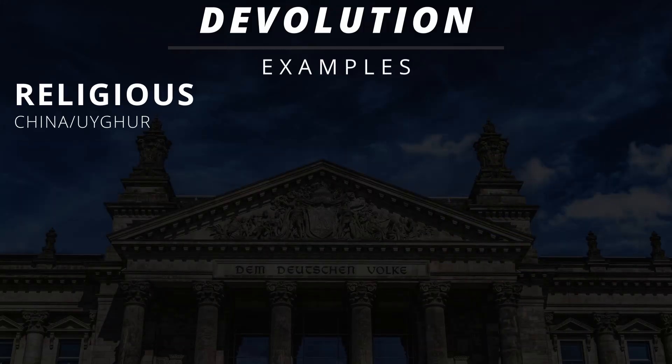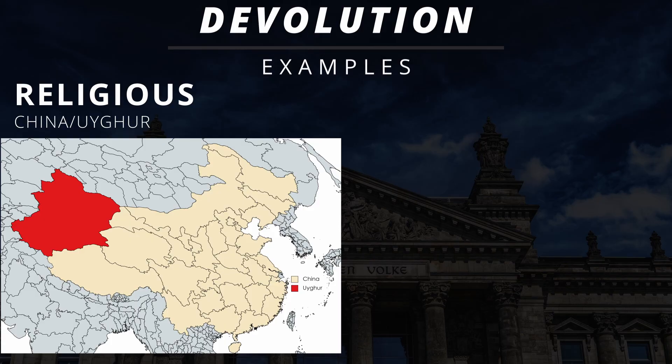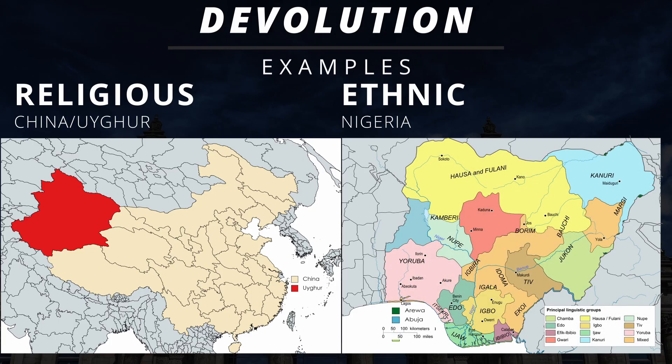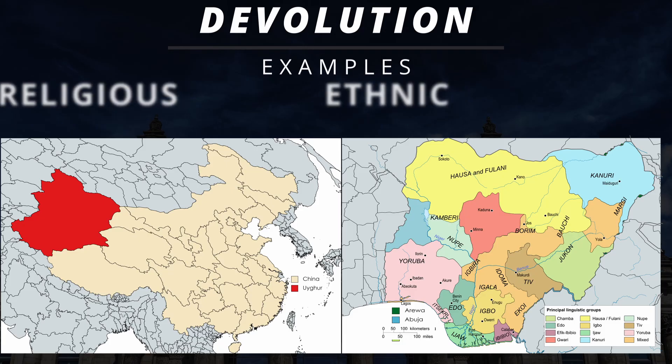A religious example of a devolutionary movement can be seen with the Uyghur population in the Xinjiang province of China, where the majority of this group is Muslim and have been facing discrimination from the Chinese government. Some have even proposed possible devolution to counteract this, although it is very unlikely that the Chinese Communist Party would allow this to occur. There have also been proposals of devolution in Nigeria because of the various ethnic and cultural groups that reside in the state, with problems including ethno-religious conflict, unequal allocation of resources, and power clashes in the government.